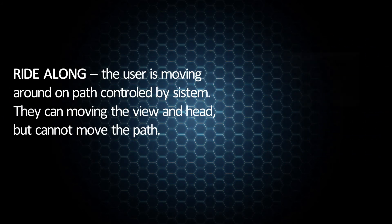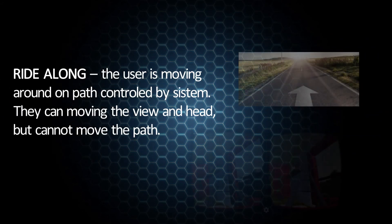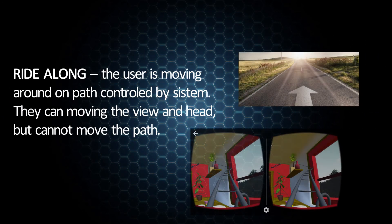In a ride-along method, the user is moving around on a path controlled by the system. They can move their view and head, but cannot change the path.